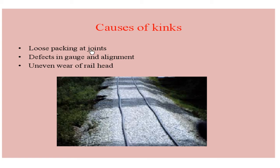The causes of kink are: loose packing at joints — packing is a method of forcing stone ballast below the sleepers. If the joints are not strong enough, sufficient stability is not given to the rail and these deformations happen. Another cause is defect in gauge and alignment — if alignment is not properly done or if there is a gauge distance problem, kinks will be formed. Uneven wear of the rail head can also cause a kink.